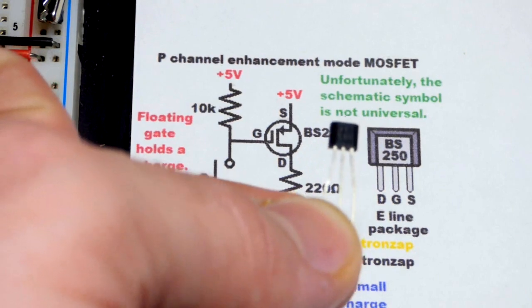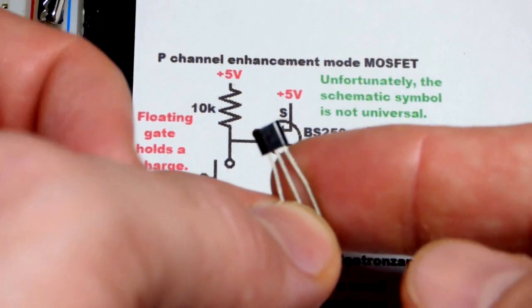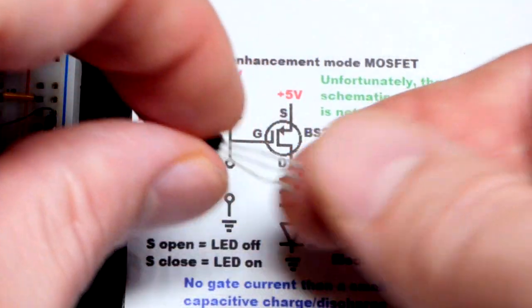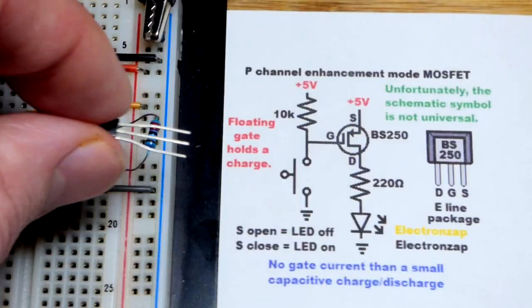So here is the actual component right there. You can see the source is to the right and gate's in the middle. So if I swivel it this way, now the source is on top, the gate in the middle, and the drain at the bottom.